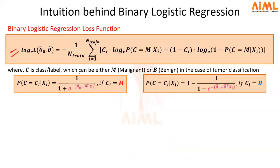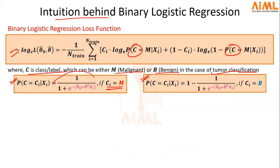This is the loss function of binary logistic regression. In this loss function, the variable C is actually the class-level variable, which can be either malignant or benign, depending upon whether the tumor is malignant or benign — because we are taking an example of tumor classification to understand the intuition. Here we have defined two probabilities: the first one is the probability of any i-th tumor being malignant, which can be calculated using this expression. The second one is the probability of any i-th tumor being benign, which can be calculated in this manner.